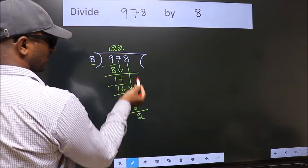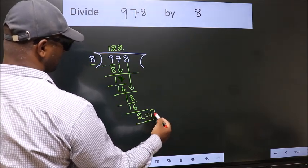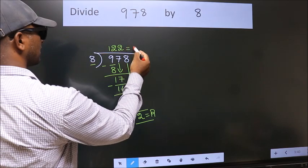No more numbers to bring down. So we stop here. This is our remainder. This is our quotient.